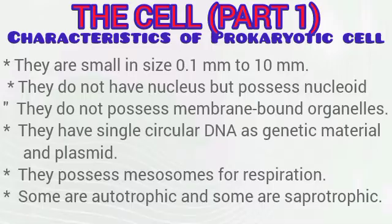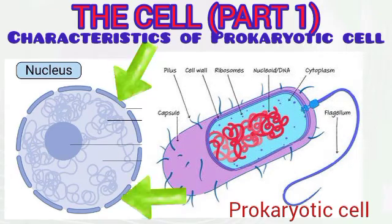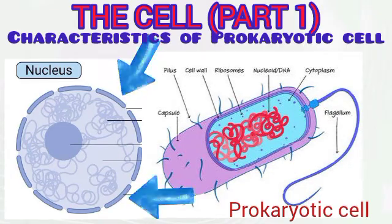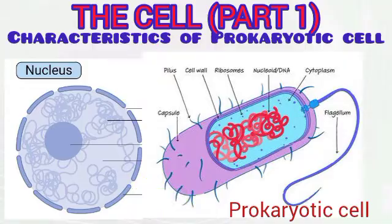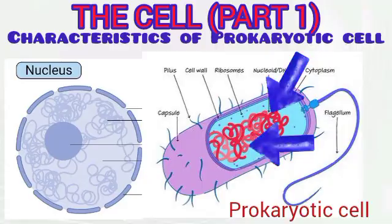What are the characteristics of prokaryotic cells? They are very small in size, ranging from 0.1 µm to about 10 µm. They do not have a nucleus but possess a nucleoid. As you can see in the diagram, the nucleus has a nuclear membrane. The nucleoid in the prokaryotic cell has no nuclear membrane — the nuclear material is scattered inside the cytoplasm.